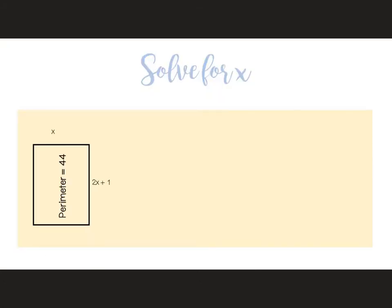Another example — same thing, label your opposite sides as the same. We know perimeter means add all the sides together, so x plus 2x plus 1 plus x plus 2x plus 1 equals 44. Combine like terms: x, 2x, x, 2x — that's 6x total.